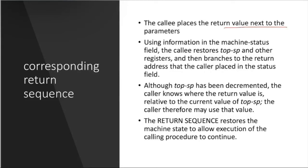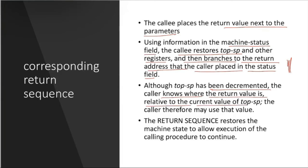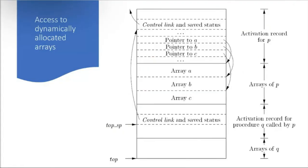In the return sequence: the callee places a return value next to the parameters using the machine status field; the callee restores the top of stack and other registers, then branches to the return address that the caller placed in the status field. Although the stack has been decremented, the caller knows where the return value is relative to the current stack value, and may use it. The return sequence restores the machine state to allow execution of the calling procedure to continue.